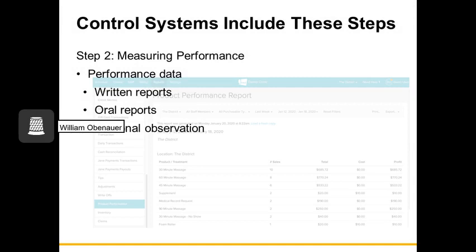As we measure performance, we pull data from a variety of sources. The most common is written reports — more formal documents like a profit and loss statement or balanced scorecard, which might print annually, monthly, or weekly. Our information systems also generate written reports; for example, when I was in management I could pull my sales by the hour at any given point in time.